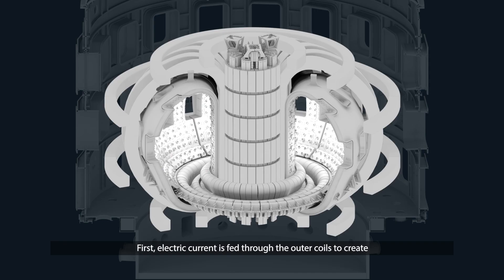First, electric current is fed through the outer coils to create magnetic fields that will help shape the plasma.